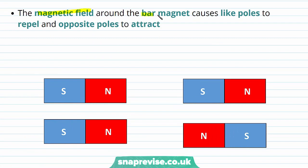The magnetic field around the bar magnet causes like poles to repel and opposite poles to attract. So here we can see that the north pole of one magnet and the south pole of another magnet cause the two magnets to attract each other. However, if we have two north poles facing each other, they're going to experience a force of repulsion causing them to move apart.